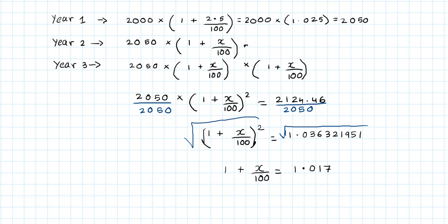Okay, the next step would be to subtract 1. Subtract 1 from both sides. This would then leave me with x/100, and that would be equal to 0.017998994.